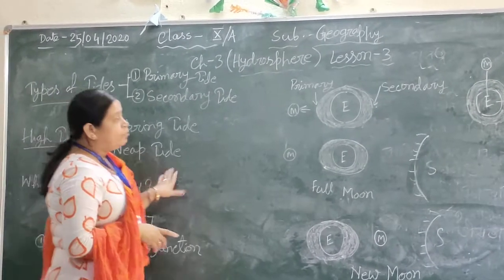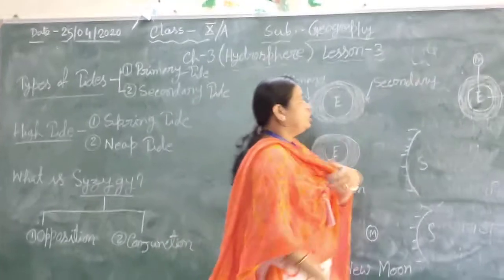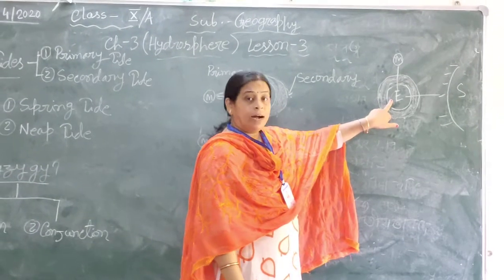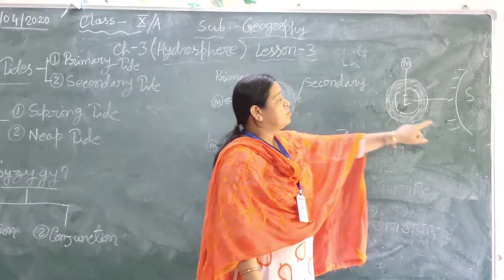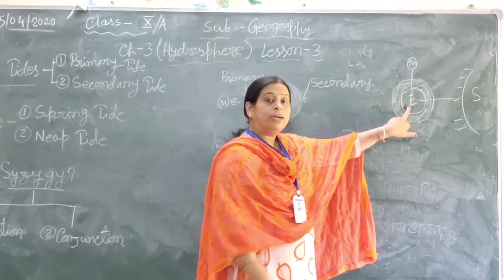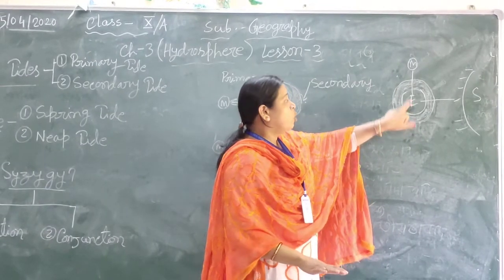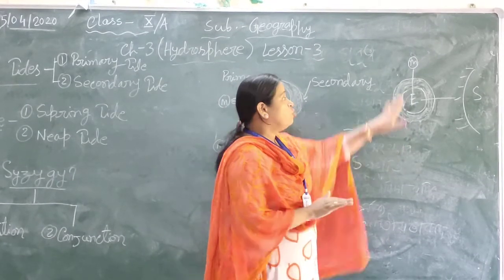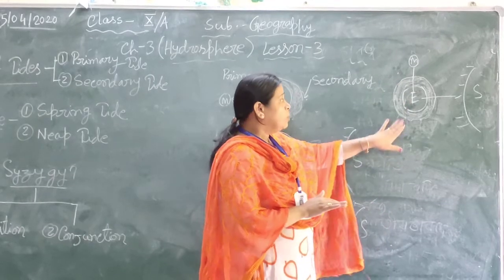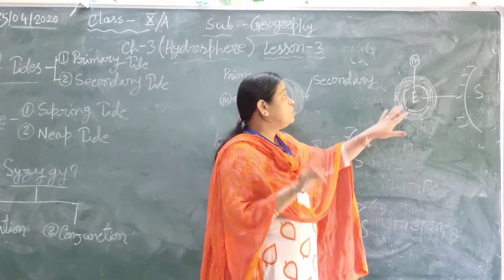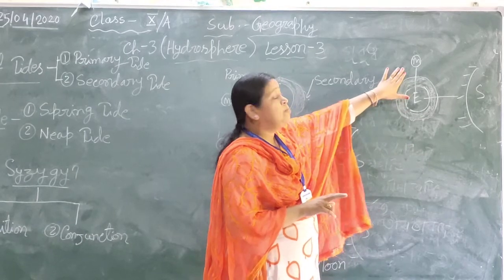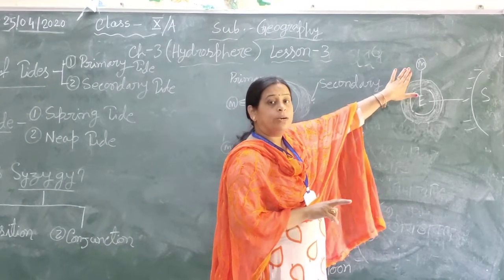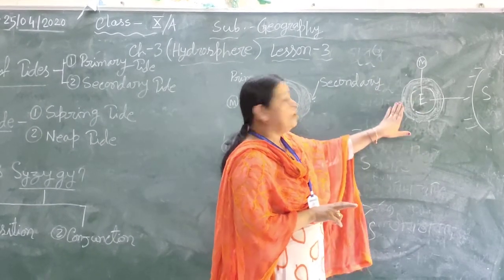What is neap tide? Neap tide occurs when the position of the moon and the sun is at a 90-degree angle with the center of the earth. When the moon and the sun form a 90-degree angle with respect to the earth, it produces a lower high tide, called neap tide. It is experienced twice in a month: during the first quarter and the third quarter of the moon.